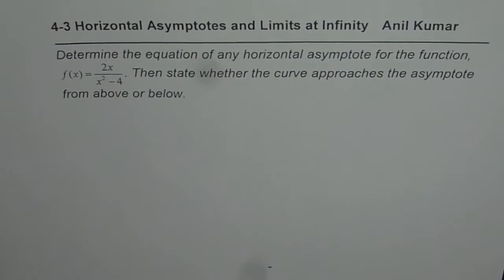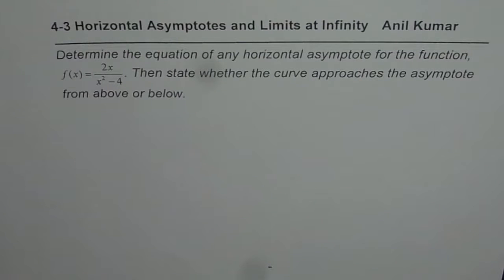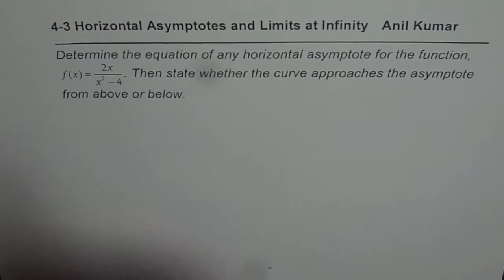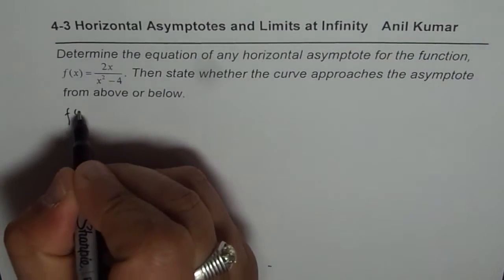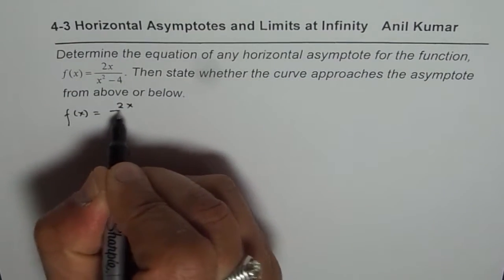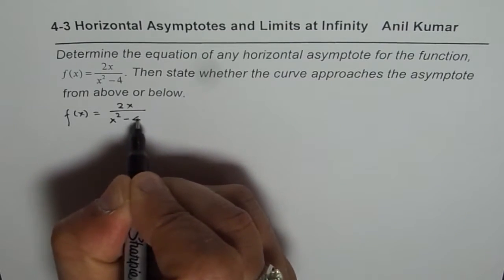I am Anil Kumar and in this video we will learn how to find horizontal asymptotes and how to find limits at infinity. The question is: determine the equation of any horizontal asymptote for the function f(x) = 2x divided by x squared minus 4. Then state whether the curve approaches the asymptote from above or below. The function given to us is f(x) = 2x over x squared minus 4.